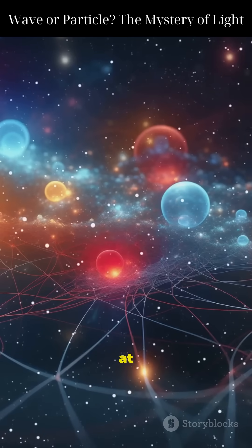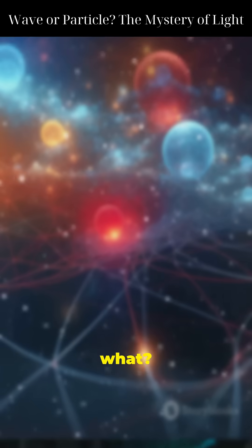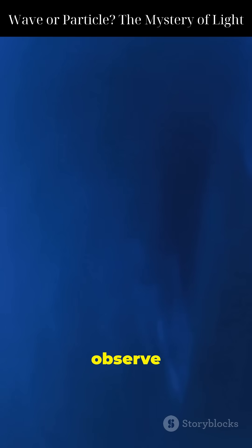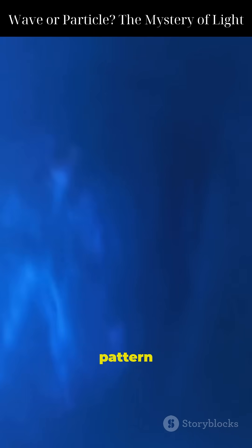In quantum physics, we fire one photon at a time through the slits. Guess what? They still form an interference pattern. But only if we don't observe them. Watch them, and the pattern disappears.